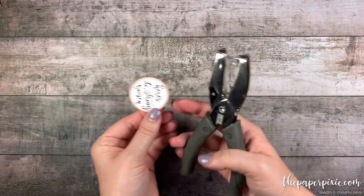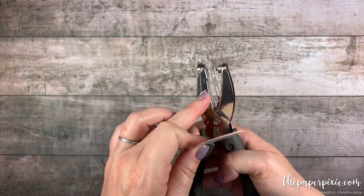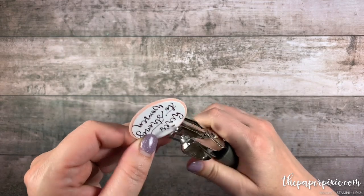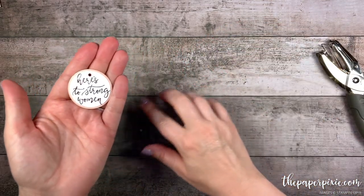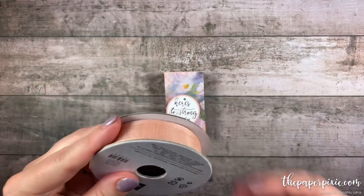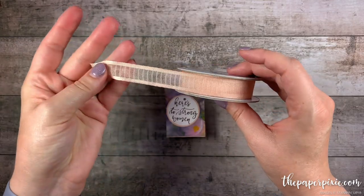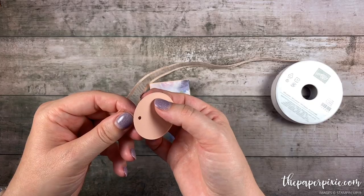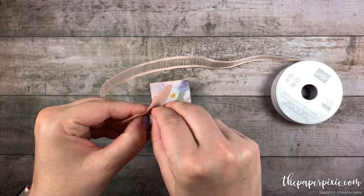Then I've got a hole punch here. It's an eighth of an inch circle punch. This has retired, but any hole punch will work. I'm just going to punch a little hole at the top of that. We're creating a little tag there. Bring in our box and then we're going to use the petal pink striped organdy ribbon. I love this ribbon. It's been very popular. I'm first going to feed the tag onto that before I tie a bow.